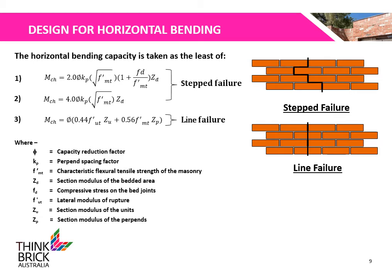The horizontal bending capacity shall be taken as the least of three equations, where Φ is the capacity reduction factor, Kp is the perpen spacing factor, FMt is the characteristic flexural tensile strength of the masonry, ZD is the section modulus of the bedded area, Fd is the compressive stress on the bed joints, FUt is the lateral modulus of rupture, ZD is the section modulus of the units, and Zp is the section modulus of the perpens. The first two equations represent stepped failure, while the third equation represents line failure.